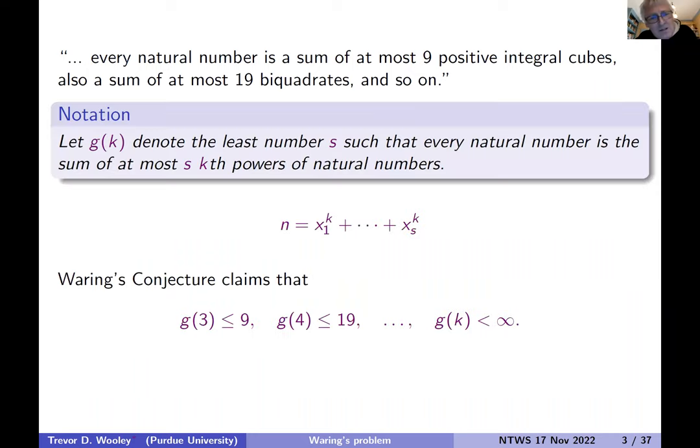So let's have some notation to summarize this in ways we can use in brief form. Little g of k is traditionally used to denote the least number s, so that every natural number is the sum of at most s k-th powers of natural numbers. So Waring's conjecture claims that g of three is at most nine and g of four is at most 19.